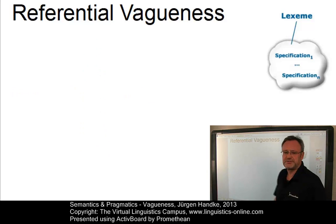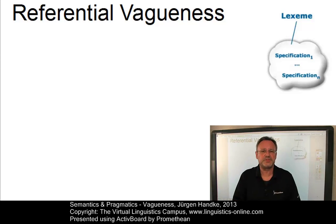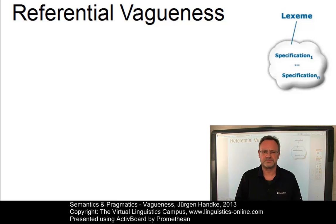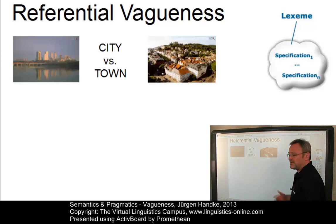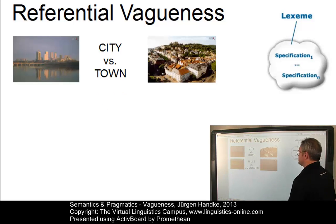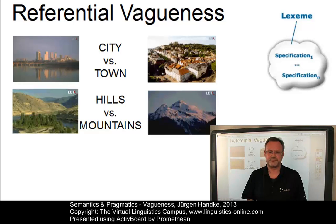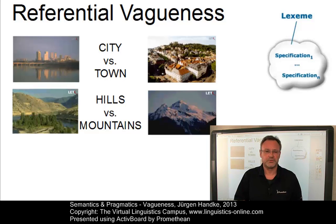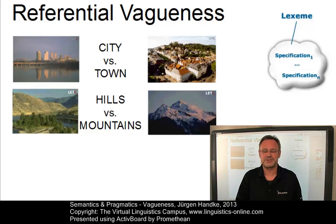Let us start with referential vagueness. Referential vagueness is a property of lexical items whose meaning is in principle clear enough, but for which it may be hard to decide whether or not they can be applied to certain objects. For example: what is the borderline between a city and a town? How do we distinguish hills from mountains? Especially in the case of hill versus mountain, your personal background plays an important role — do you live near the sea where you do not even have hills? I leave that decision up to you.